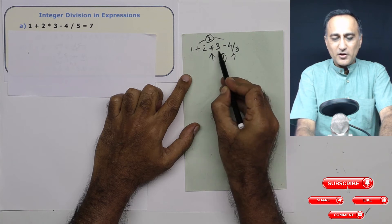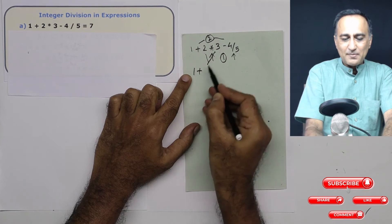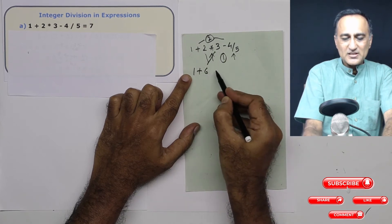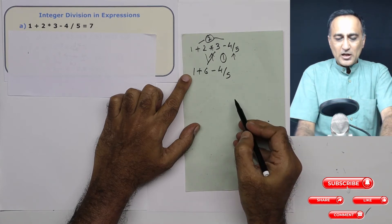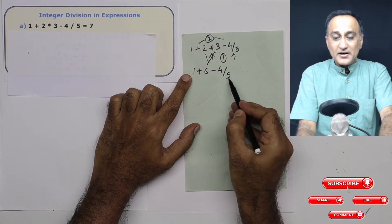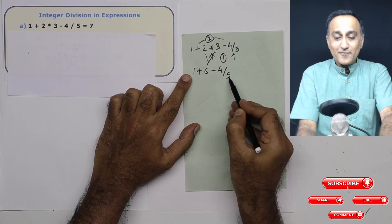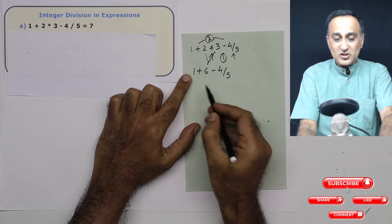So first what I will do is I will make this step next. I'll take this and I'll make it 1 plus 3 into 2 is 6 minus 4 upon 5. Now the next priority was division. Here you need to understand I am doing a normal integer division. 4 upon 5 is not going to be 0.8, it is going to turn out to be 0.